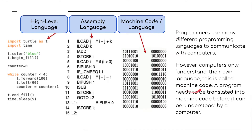Computers only understand their own language. This is machine code, which is usually either binary or hexadecimal. A program needs to be translated from one of these other two languages into machine code in order for a computer to be able to understand it.